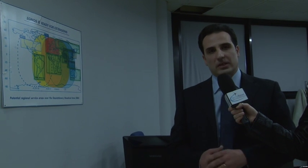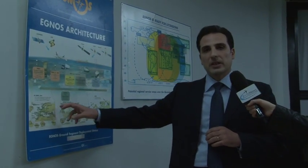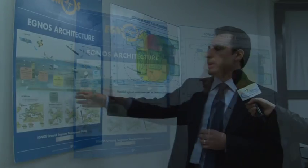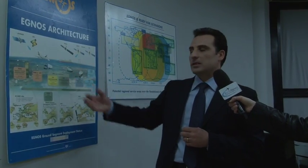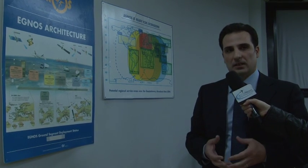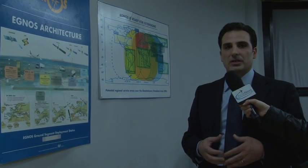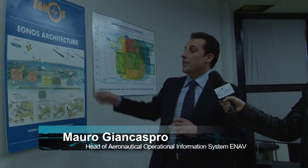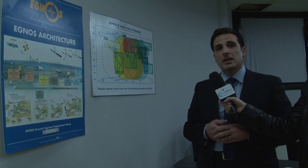The EGNOS architecture is essentially composed of two big segments: the space segment and the ground segment. The ground segment is essentially composed of 34 range integrity monitoring stations — antennas that receive the GPS signals and send all information through the network to the MCC master control centers, where the central processing facilities make all the corrections and elaborations to improve accuracy, integrity, and continuity of the signal.